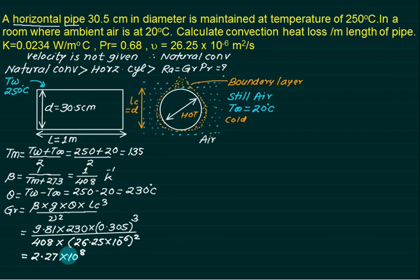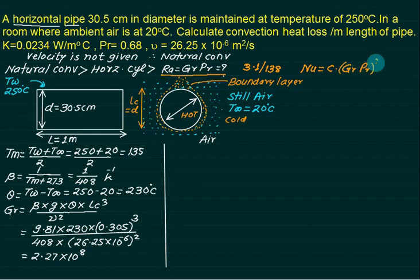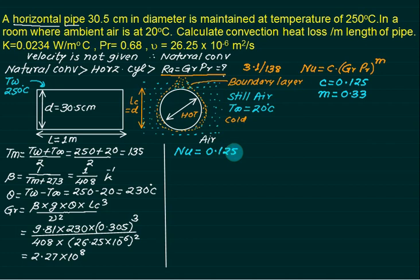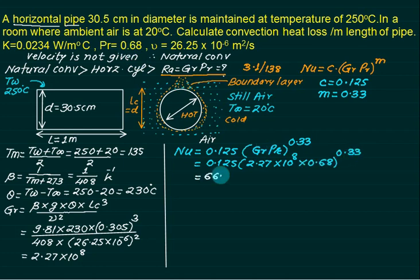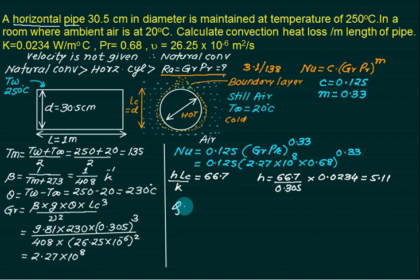To select the table, calculate Gr × Pr using table 3.1 (page 138). The correlation has the form Nu = C × (GrPr)^M. Check the range of GrPr to select C and M. For this case, C = 0.125 and M = 0.33. So Nu = 0.125 × (Gr × Pr)^0.33 = 0.125 × (2.27×10⁸ × 0.68)^0.33. Nusselt number = 66.7. Therefore h = 66.7 × K / Lc = 66.7 × 0.0234 / 0.305 = 5.11 W/m²K.